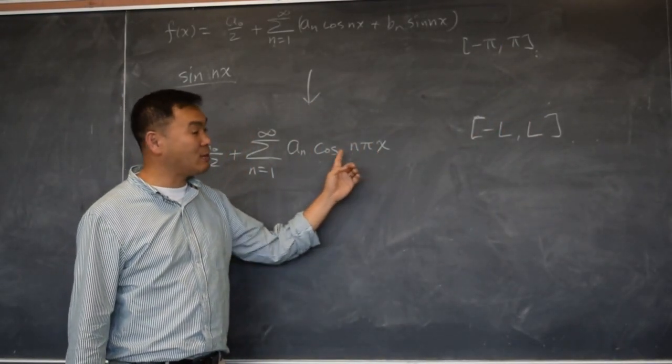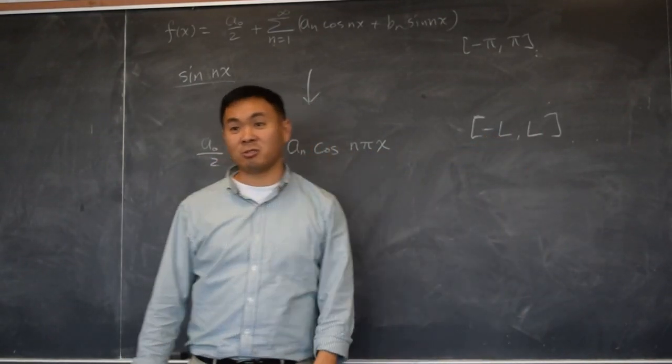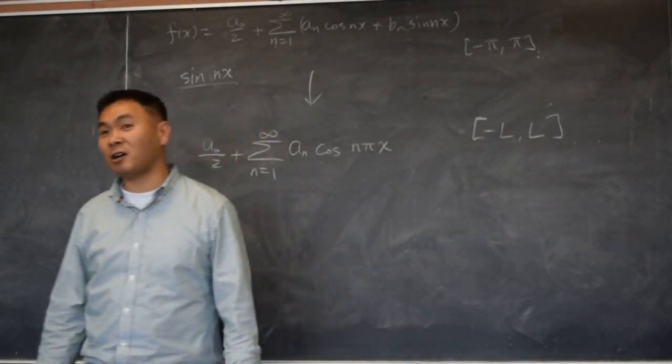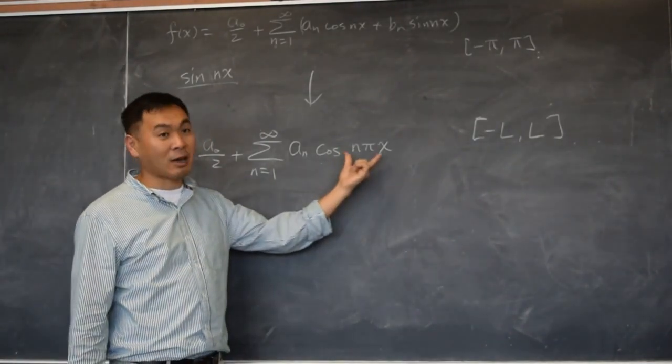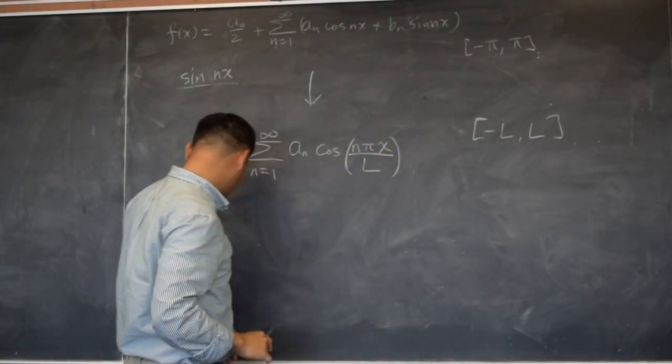So this one will be from negative one to one. Now you want it to be negative L to L. What do you do? You expand it back to how much? L. How do you do that? How do you multiply by L? In the graph, what do you have to do? Divide by L. Divide by L. So that's what you need.